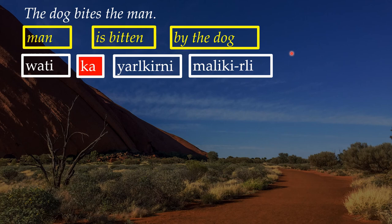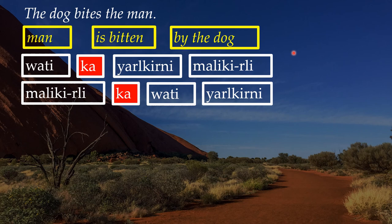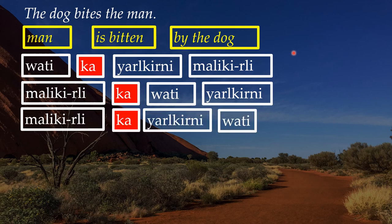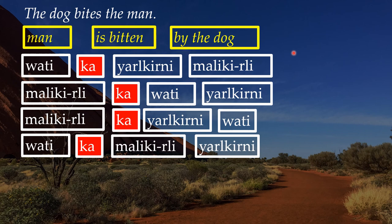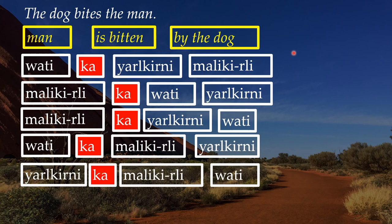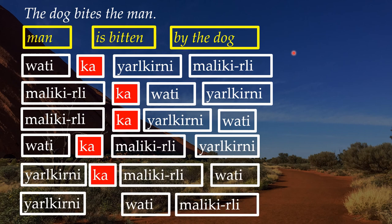So 'wadi ga yalgirni maligiri' — literally 'the man is bitten by the dog.' Because of how flexible the language is, you can rearrange this in any way you like: 'maligiri ga wadi yalgirni,' 'maligiri ga yalgirni wadi,' 'wadi ga maligiri yalgirni,' 'yalgirni ga maligiri wadi,' 'yalgirni ga wadi maligiri' — they all mean the exact same thing. The only difference is the emphasis: is it the man, the biting, or the dog that is the most important element?